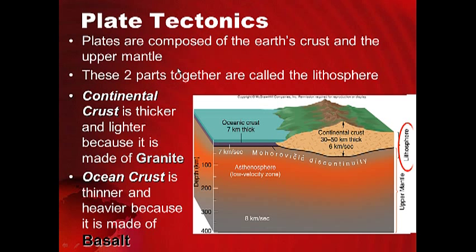Plates are composed of the earth's crust and the upper mantle — we call this the lithosphere. Continental crust is thicker and lighter because it is made of a rock called granite, which is what the continents are made of mostly. It has a lower density, so it floats. Ocean crust is thinner and heavier — more dense — because it is made of basalt, a dark, heavier rock.